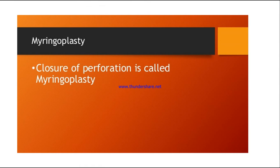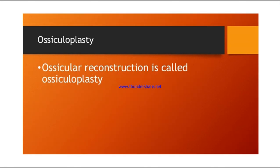The second surgical option is myringoplasty, which is the closure of the perforation — closing the hole. The third is ossiculoplasty, which is ossicular reconstruction. If there is any disruption of the incus, stapes, or malleus due to the tympanic membrane perforation, ossiculoplasty is performed to reconstruct and restore normal function of these three bones.